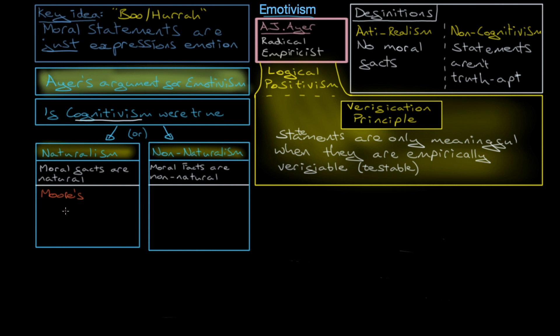look at G.E. Moore's open question argument. He says, any time you try to define good as a moral fact, there's always an exception you can think of. There's always further questions you can ask. And so, no definition in terms of natural facts work. So, Moore produces the naturalistic fallacy. And the naturalistic fallacy says, you cannot define good. Certainly, not as something that is natural and in the world.